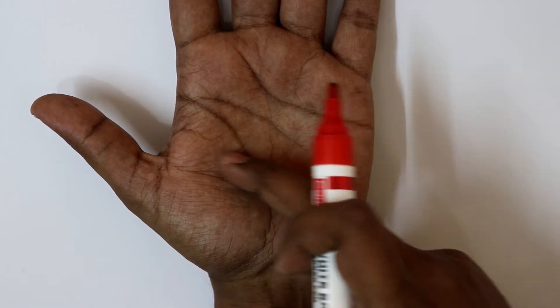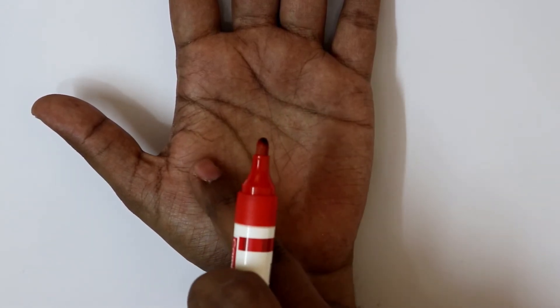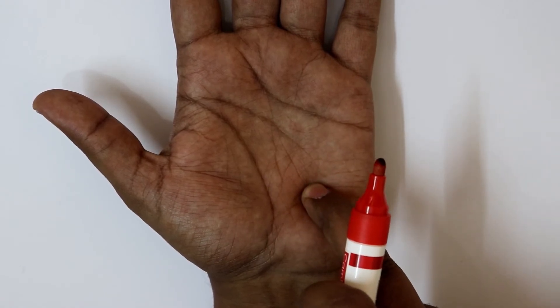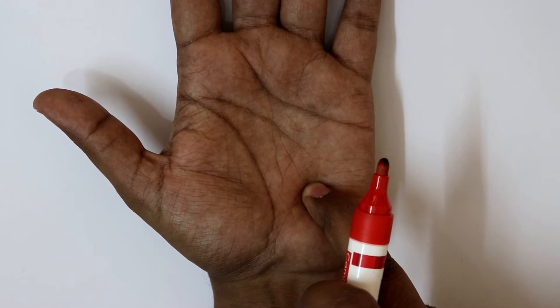And for palpation of the hook of hamate, see my previous video on surface marking of flexor retinaculum of hand.